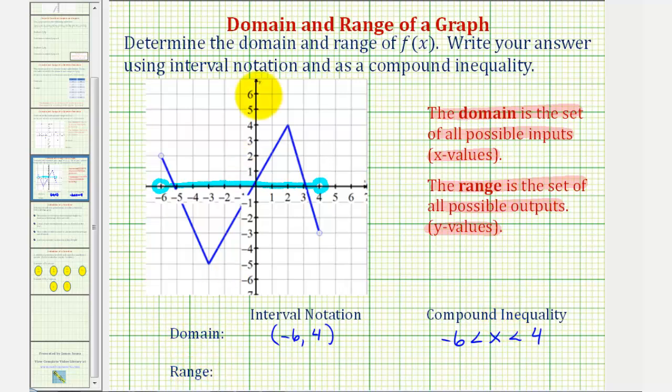And now we'll analyze the graph vertically to determine the range. Notice the lowest point on the graph would be this point here where the y value is negative five. Because this point is closed, it does include the value of y equals negative five. So the range starts at negative five, including negative five.